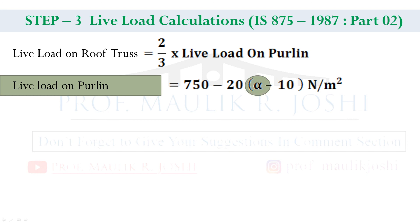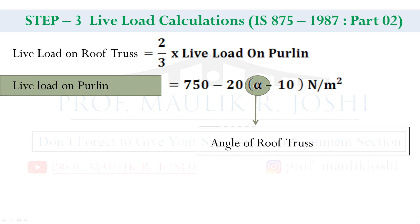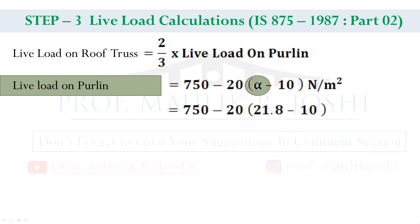Here alpha is the angle of the roof truss, which we have already calculated and its value comes to approximately 21.8 degrees. Putting this value in the equation: 750 minus 20 into (21.8 minus 10).